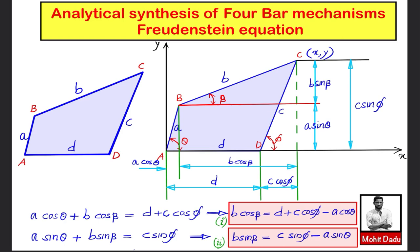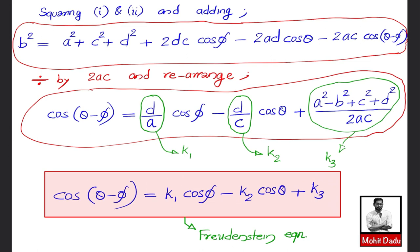Squaring Equations 1 and 2 and adding them, the left-hand side becomes b² (since sin²β + cos²β = 1). The right-hand side becomes a² + c² + d² + 2dc·cos(φ) − 2ad·cos(θ) − 2ac·cos(θ − φ).